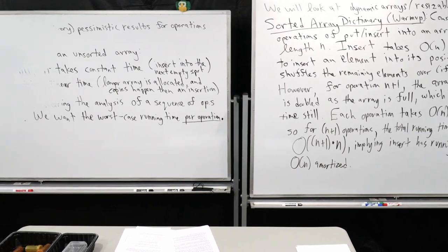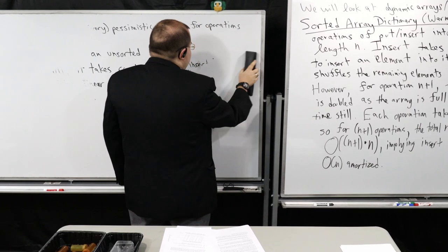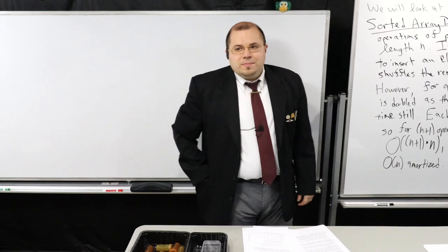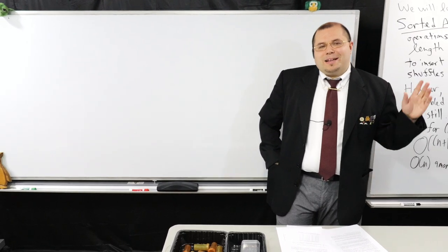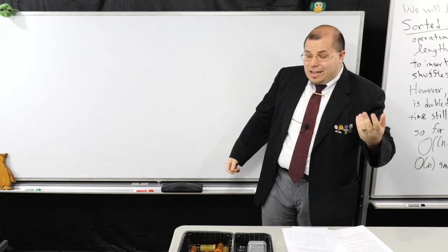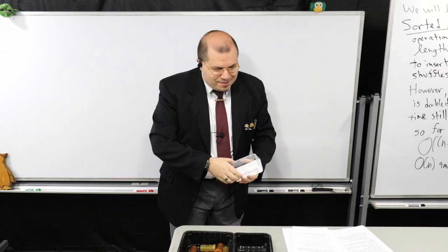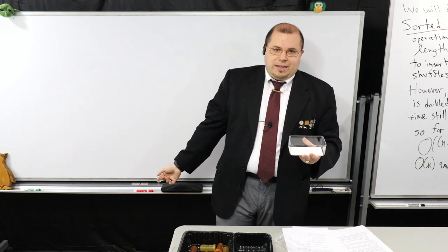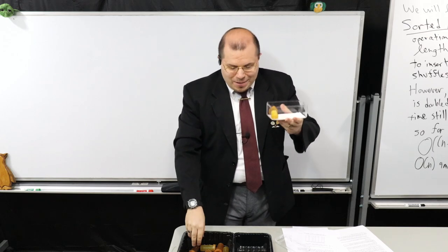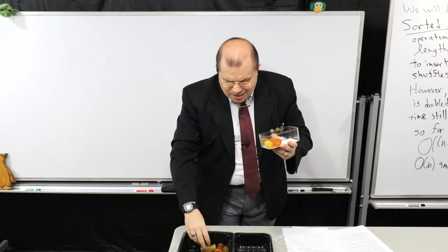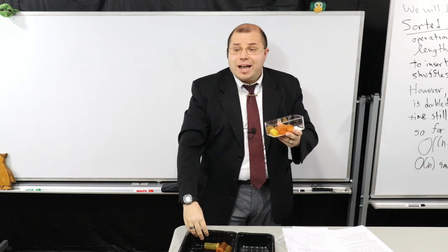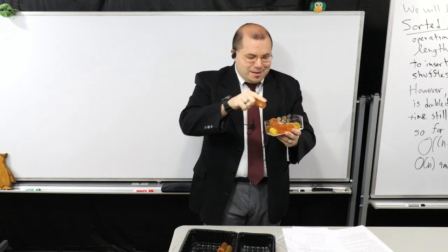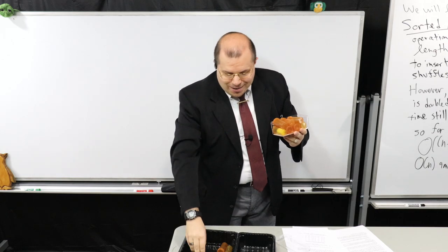I want to compare the unsorted array case with the sorted one. For an unsorted array of length n performing insertions: each insertion is cheap, taking constant time, until the array gets full. Then I have to allocate a larger array and copy everything over. In contrast, for the sorted case every single insertion takes linear time. From a pure worst-case standpoint both are big-theta of n, but that doesn't capture how radically different they actually are.